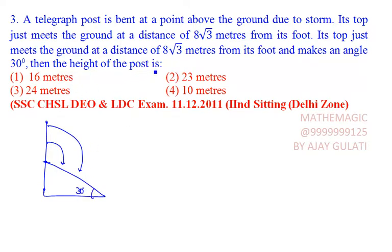We need to know the height of the post. One thing is that its top just meets the ground at a distance of 8 root 3 meters from its foot. How much is the distance from here? 8 root 3. This distance is 8 root 3.